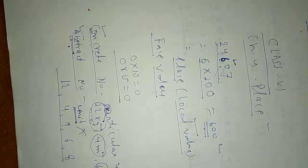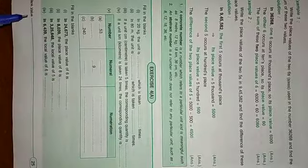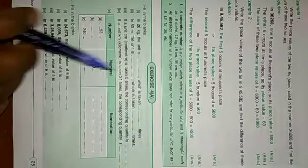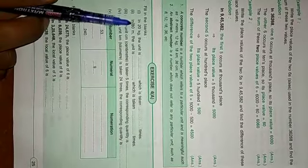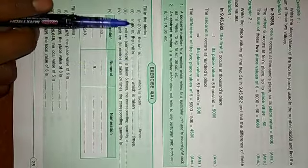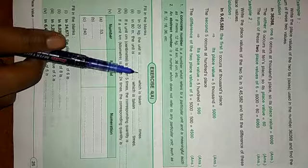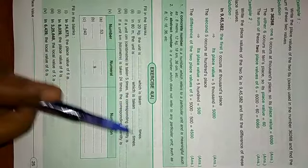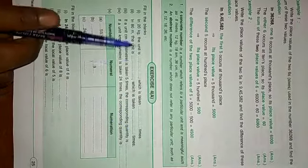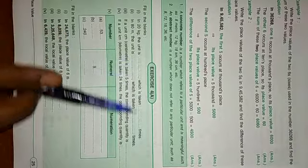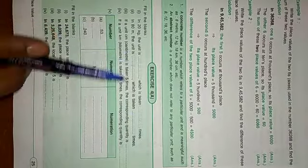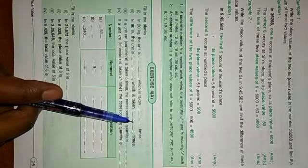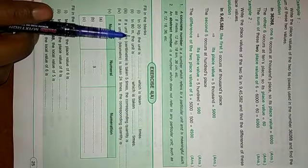Now let's start the exercises of this chapter. First, exercise 4A, question 1, fill in the blanks. In 20 kilograms, the unit is kilogram which is taken 20 times. In 80 meters, the unit is meter which is taken 80 times.